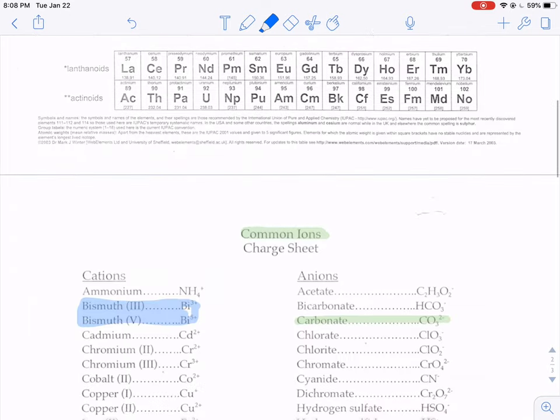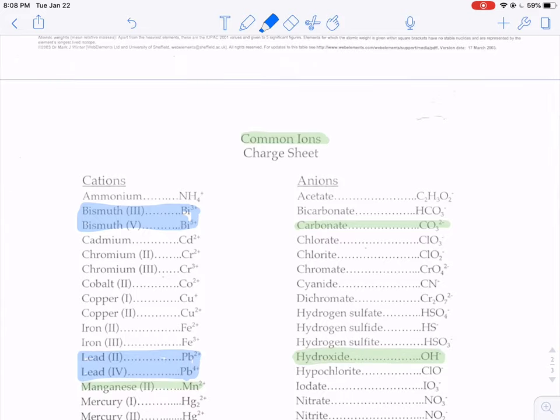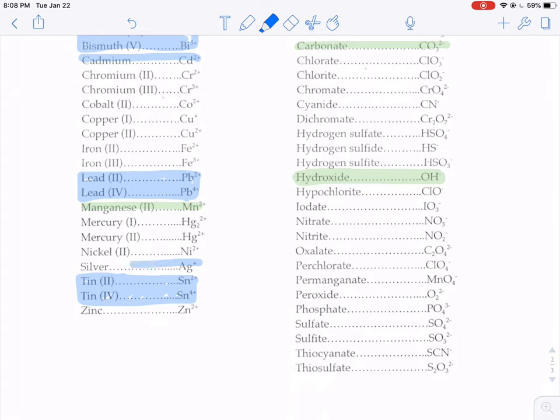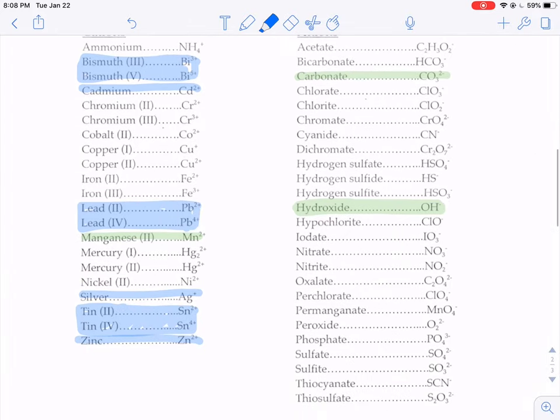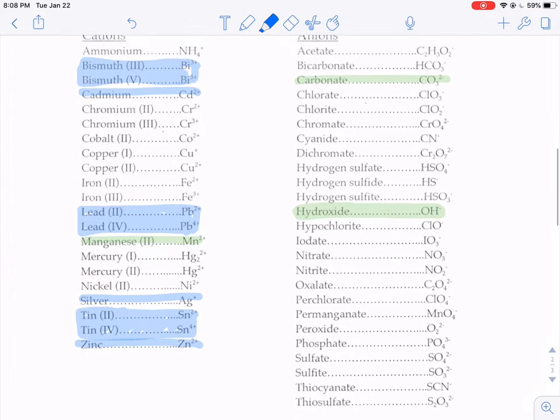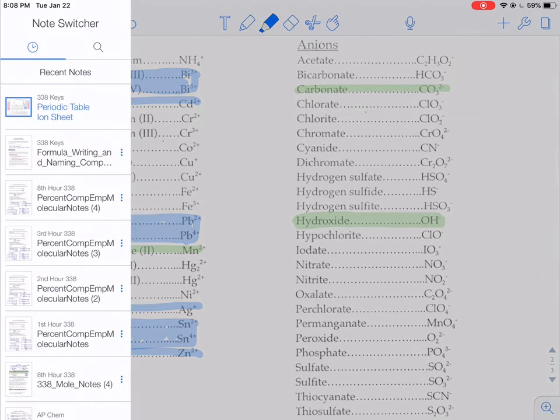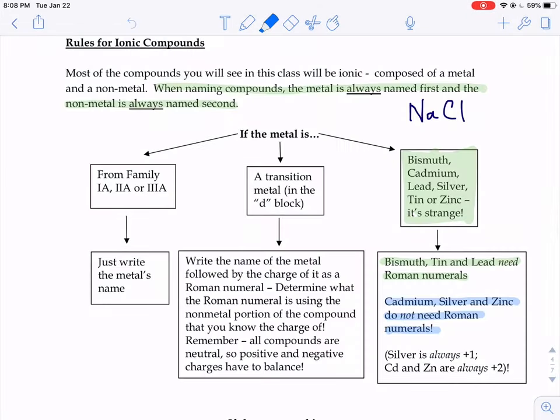And therefore we don't put a Roman numeral on it because we know what the charge is. We don't have to do that for silver, cadmium, or zinc. Their charges are consistent. Here's your cadmium, always plus two. Here's your silver, always plus one. And zinc, always plus two. Now, those handful of ions don't really follow traditional patterns. The good news is that you have all of the strange ones on your charge sheet. You don't have to memorize that at all. You just need to know what to do with the information.